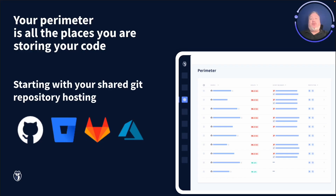In the simplest terms, your perimeter is comprised of all the places where you store your code. This, of course, starts with your shared code repositories, such as GitHub, GitLab, Bitbucket, or Azure Repos.